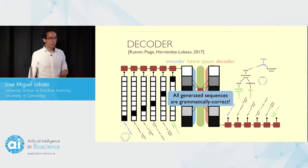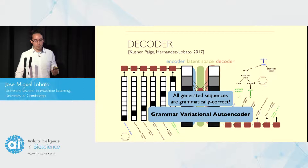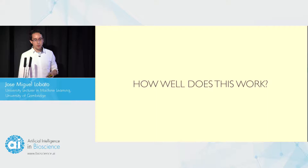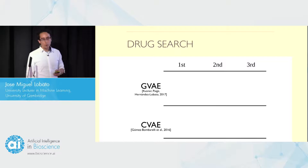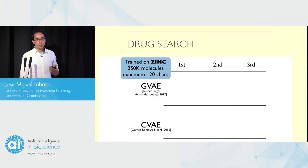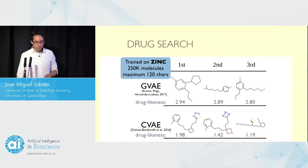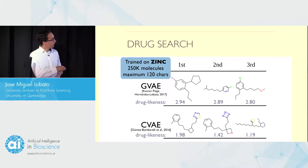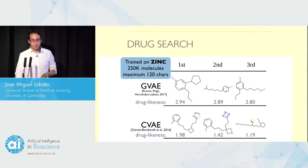We now have a generative model — the Grammar Variational Autoencoder — that generates valid parse trees and is more likely to produce valid molecules by taking into account grammar constraints. We tested this for drug search. Starting with a collection of up to 250,000 molecules, we tried to optimize a drug-likeness metric. The molecules identified using the grammar actually look more realistic and produce better values of the metric than those identified with a generative model that doesn't use the grammar.